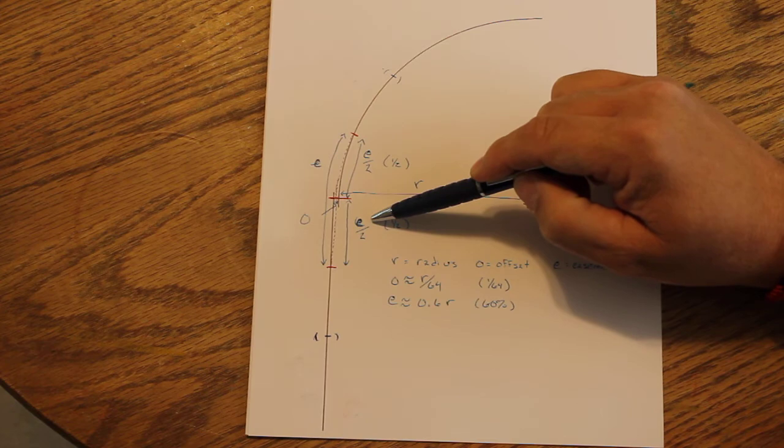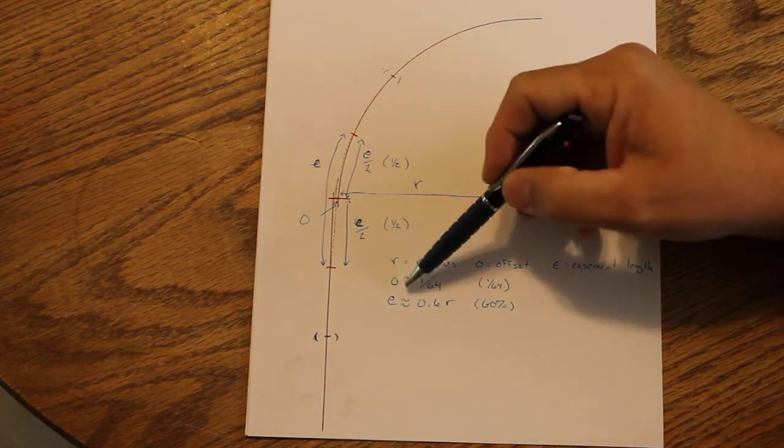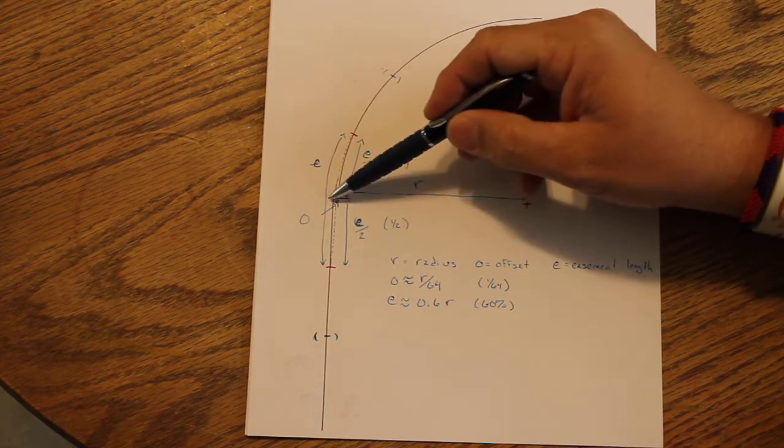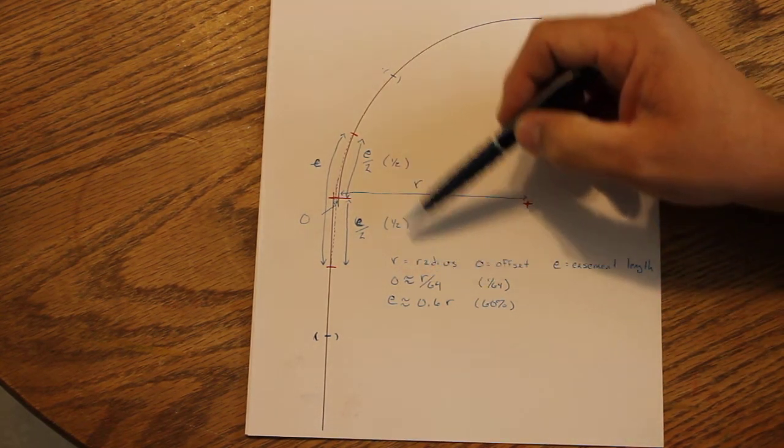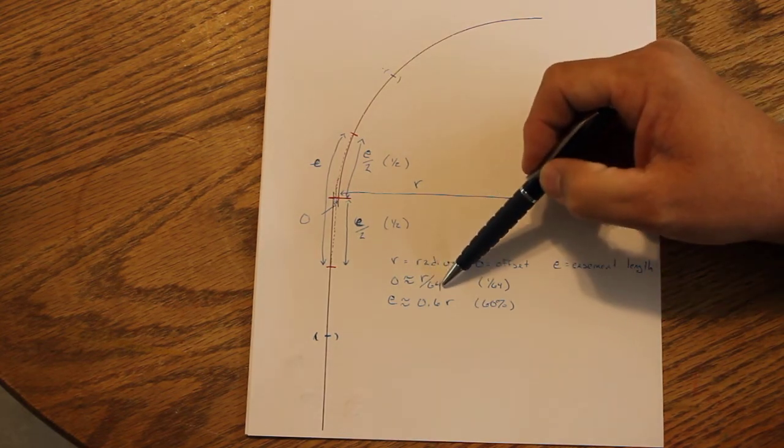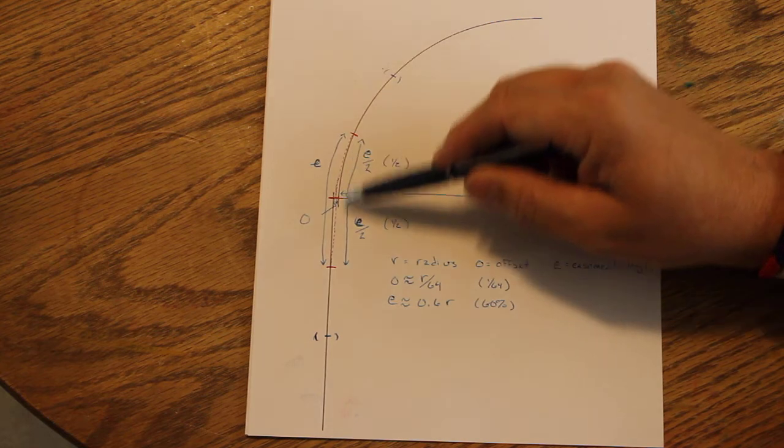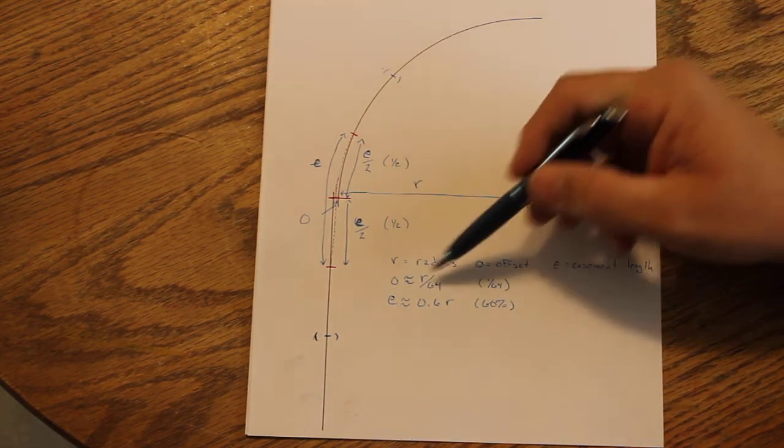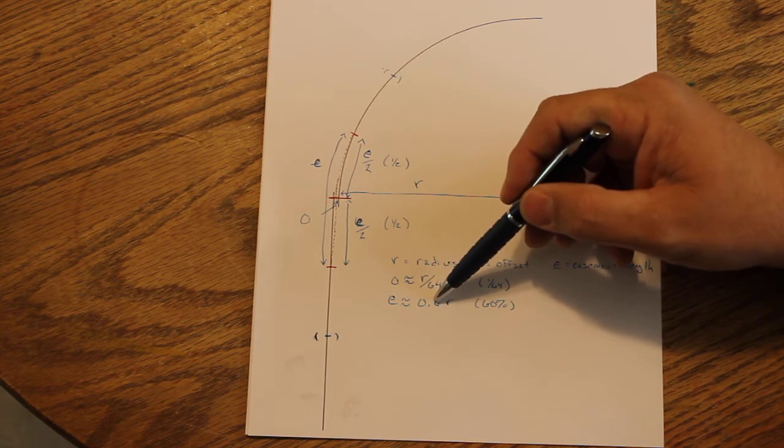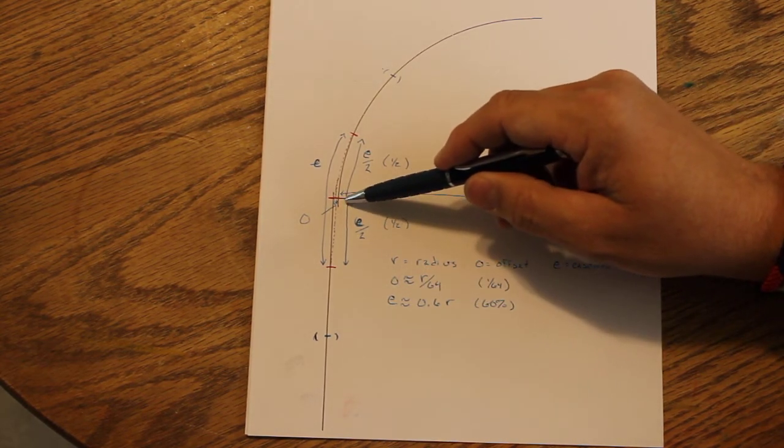So here's the formula. The offset O, for the offset, that's the amount that you're offsetting this curve, is one sixty-fourth of the radius, or R over 64. And your entire easement length should be 60% of your radius, or 0.6R. And then the distance that you measure from this reference point to where you begin and to where you end should be that easement distance E over 2.